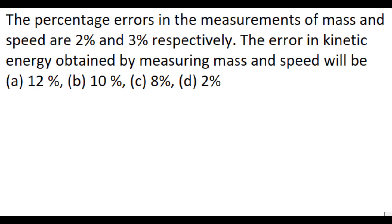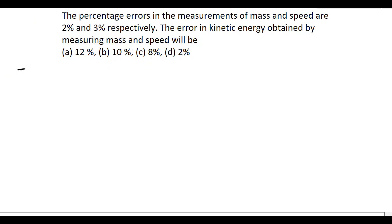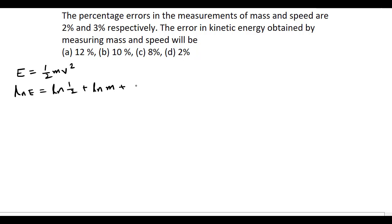The errors in the measurement of mass and speed are given; we have to find the error in kinetic energy. We know that kinetic energy E is equal to half mv squared, where m is the mass and v is the speed. Taking the logarithm on both sides: ln(E) = ln(½) + ln(m) + 2·ln(v).